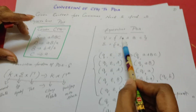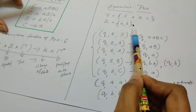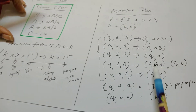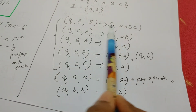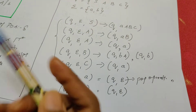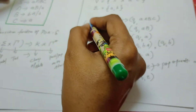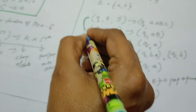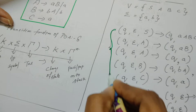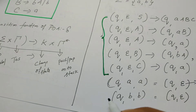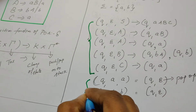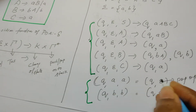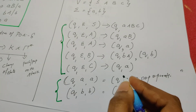For every variable as well as for every terminal symbol, we will be writing the transition rule. This is the way of writing the transition rule. This set of transition rules is written for the variables, and these two rules are written for the terminal symbols.